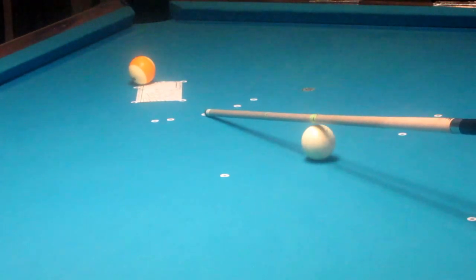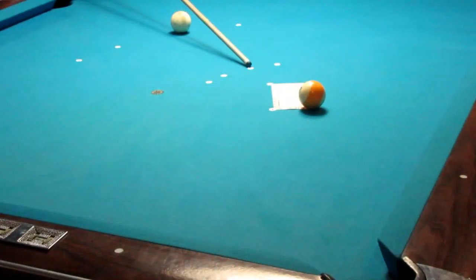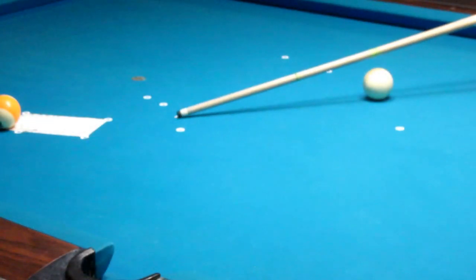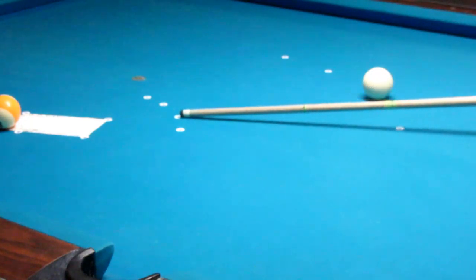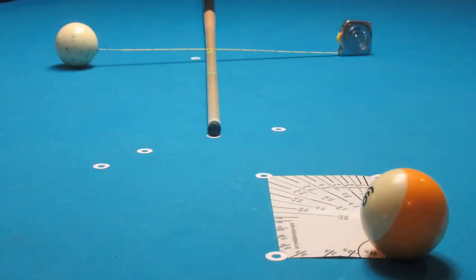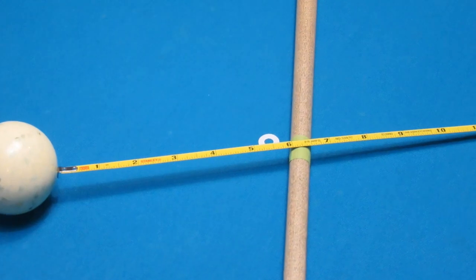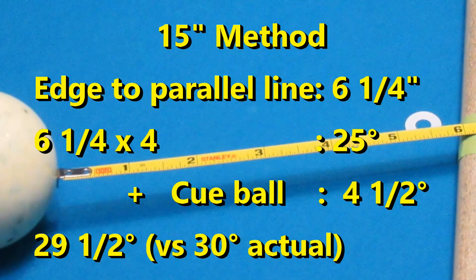Start on the line of the center of the cue ball to the center of the ghost ball. Touch the tip to the table 15 inches past the cue ball, then pivot until the cue stick is parallel to the line of the object ball to the pocket. Now estimate the distance in inches between the 15-inch mark and the point on the cloth where the center of the cue ball rests. Multiply the distance in inches by 4 for degrees. Or better: estimate the distance to the edge of the cue ball, multiply by 4, and add 4.5 degrees for the cue ball radius.